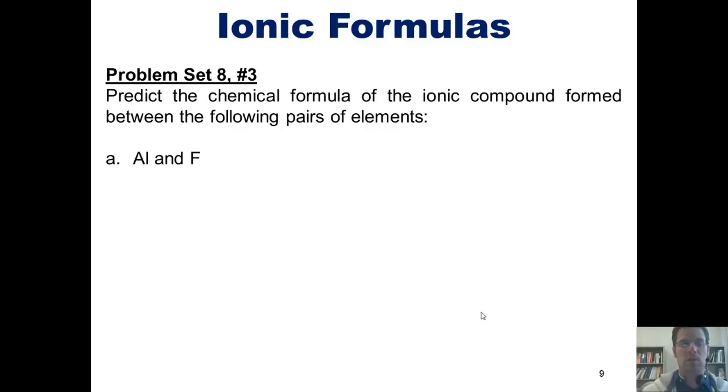the most stable cation ion of aluminum has a charge of plus three. Because fluorine appears in group 7A of the periodic table, it wants to gain one electron to feel like the nearest noble gas, also neon. Thus, fluorine's most stable ionic charge will be negative one. How do we put those together to get an overall neutral charge? Of course, we're going to have a formula of AlF3.